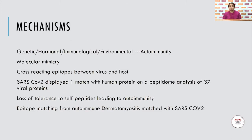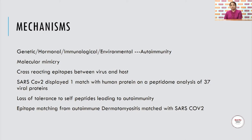How does autoimmunity come about? There are four things required for autoimmunity: a favorable genetic host, hormonal changes, immunological changes, and the right environment. When all four factors come together, there is development of autoimmunity. The mechanism by which autoimmunity is brought about includes molecular mimicry — where there are cross-reacting epitopes between the virus and the host. SARS-CoV-2 displayed one match with a human protein on a peptidome analysis of 37 viral proteins. When there is a common match, there is loss of tolerance to self-peptides, which leads to autoimmunity.